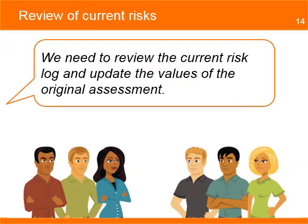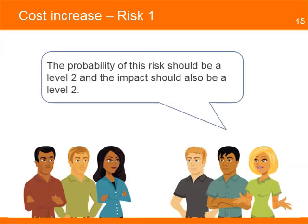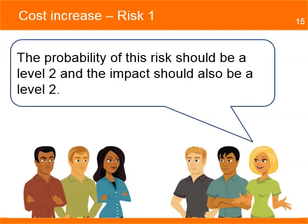During the meeting, you explain the need to review the current risk log and get new estimates for the residual risks — those are the risks expected to remain after the planned response has been taken. The team agrees to review the two risks in the log and make updates on the levels of impact and probability for the residual risk. The procurement officer reviews the first risk.